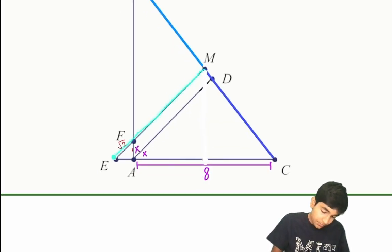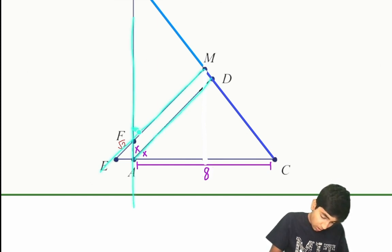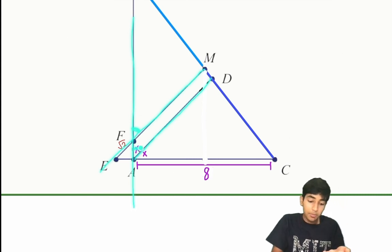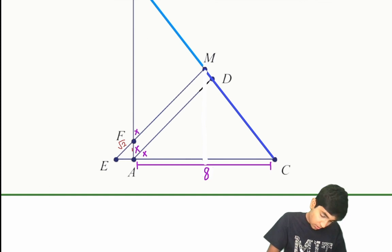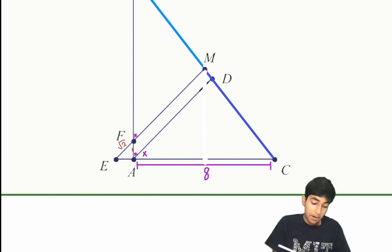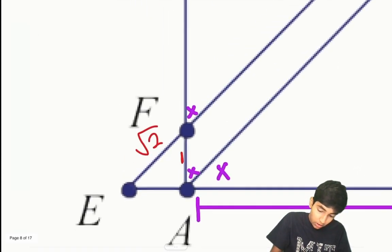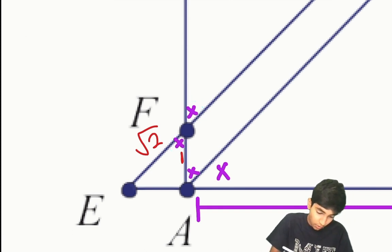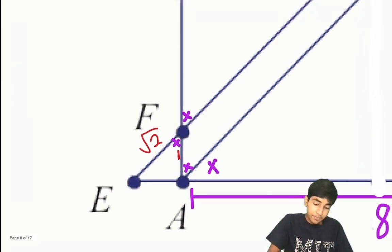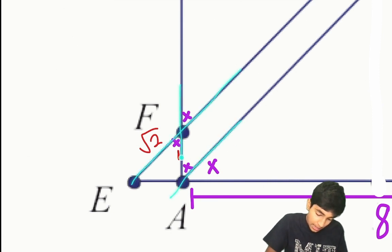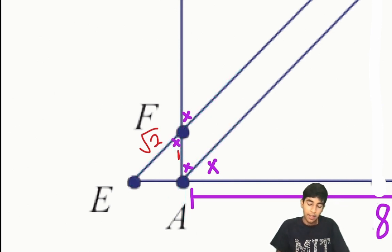These two lines are parallel, and we can think of AB as a transversal. So these two angles are going to be equal by corresponding angles and parallel lines — both quantities are x. Then by vertical angles, this angle equals this angle, so that's also x. Alternatively, you could use alternate interior angles directly to get the same statement.